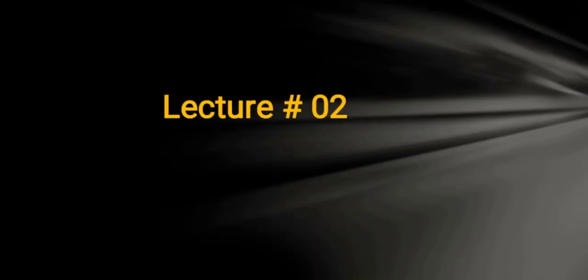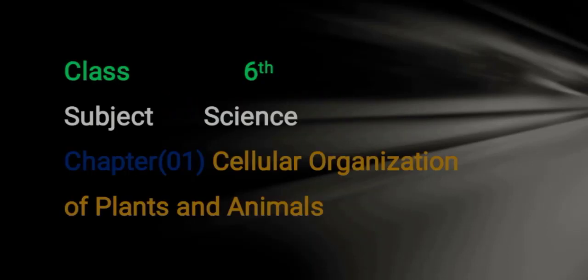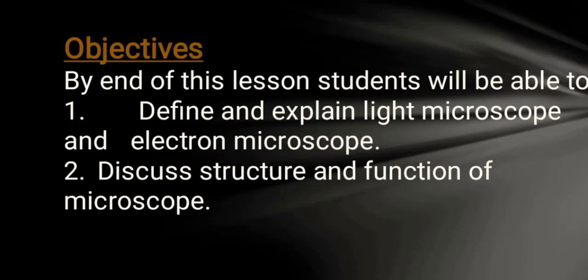Lecture No. 2. Class, Subject Science. Cellular Organization of the Plant and Animals. Objective of the lesson: By the end of this lesson, students will be able to define and explain the light microscope and electron microscope, and discuss the structure and function of the microscope.